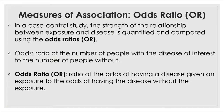Given an exposure, there will be two odds: one for the exposed and the other for the not-exposed group. When you take the ratio of these two odds, it becomes the odds ratio — the ratio of the odds of having a disease given an exposure to the odds of having the disease without the exposure.